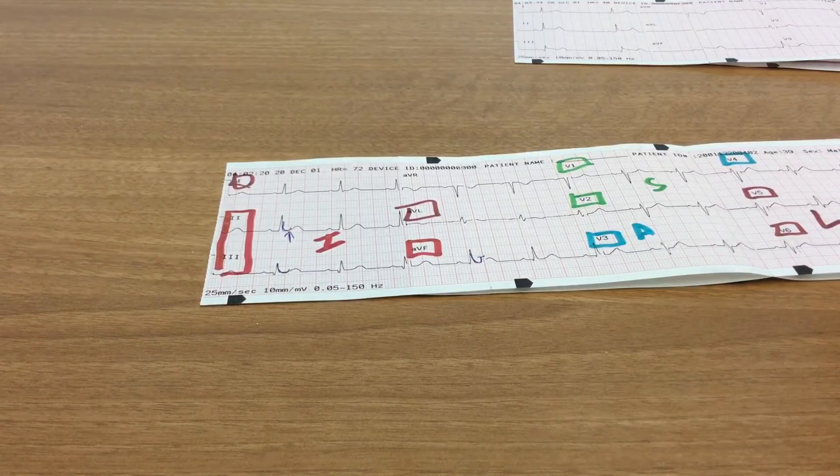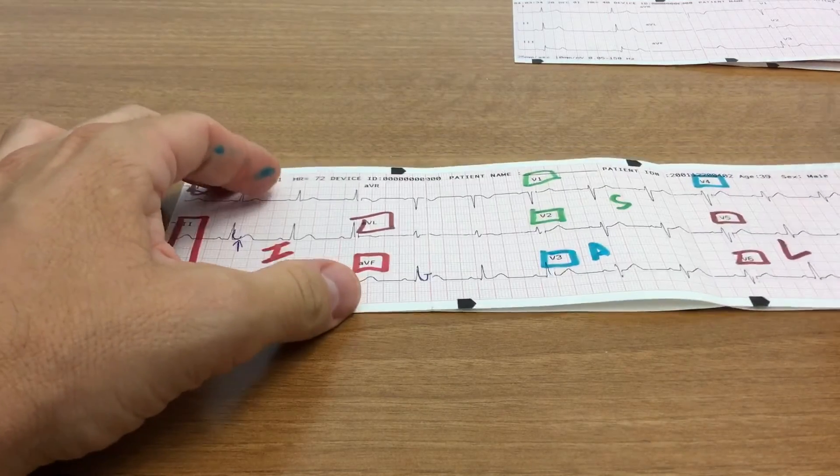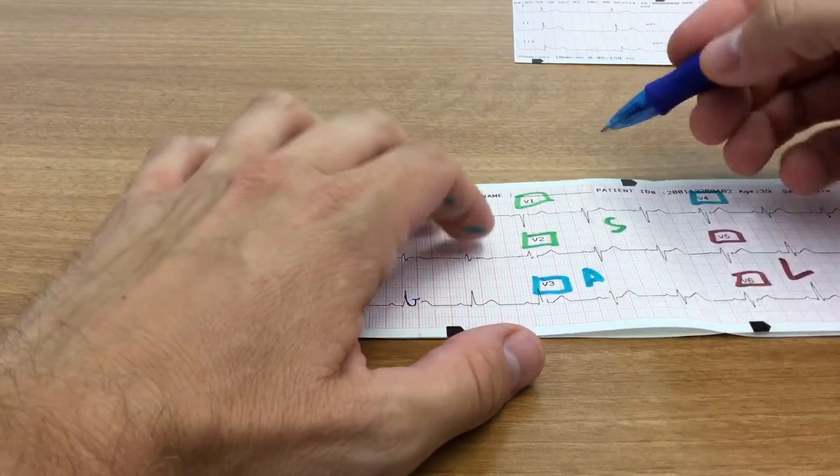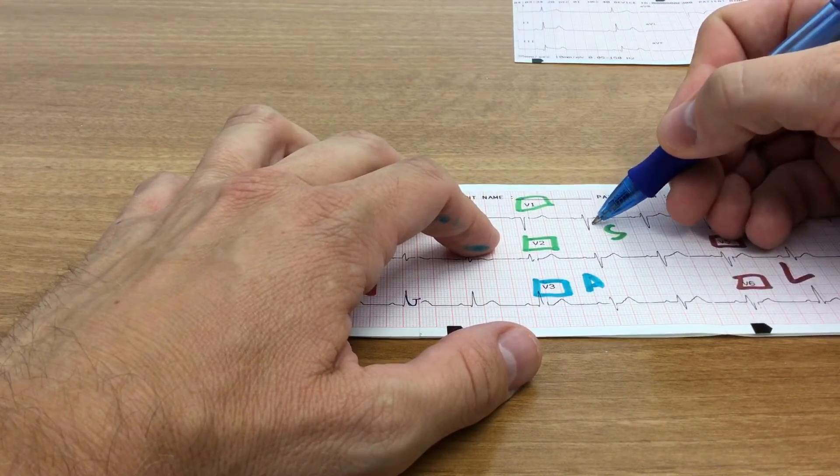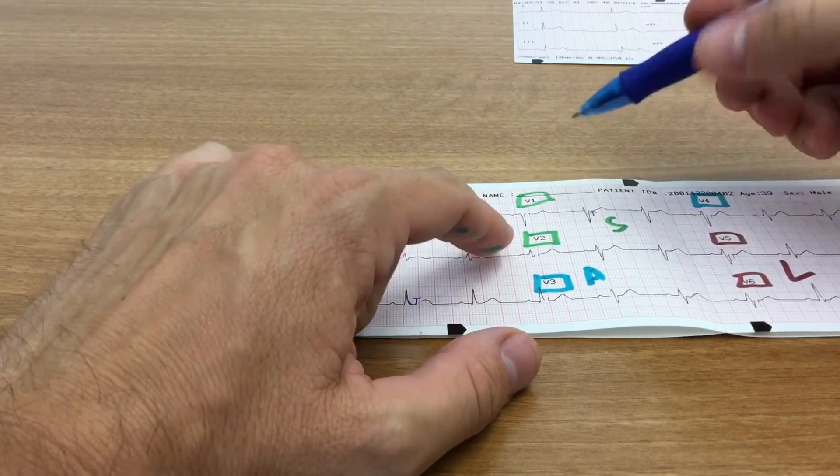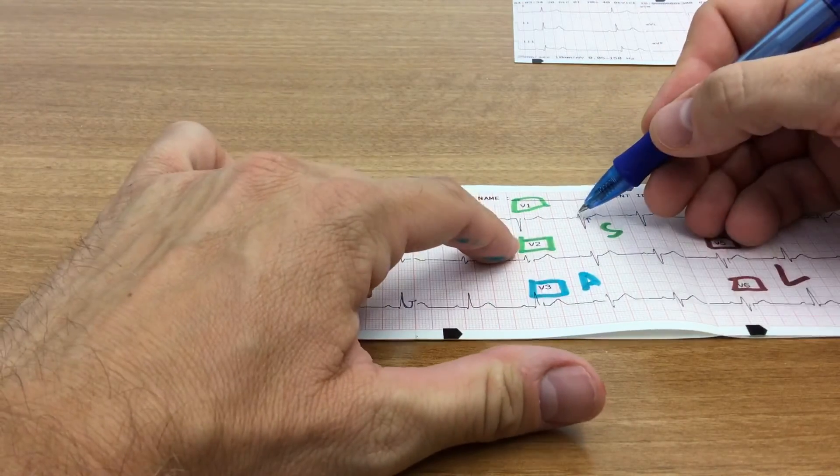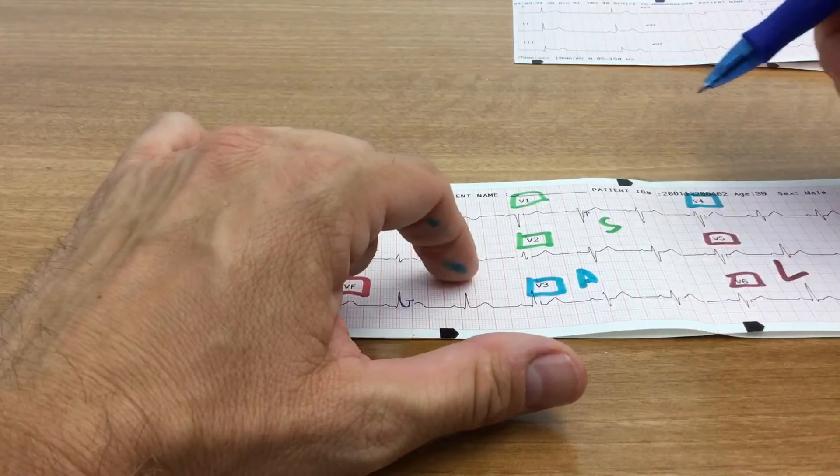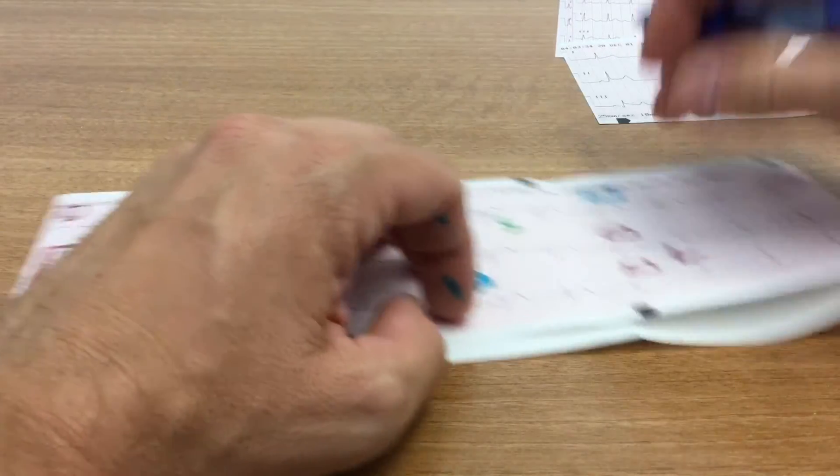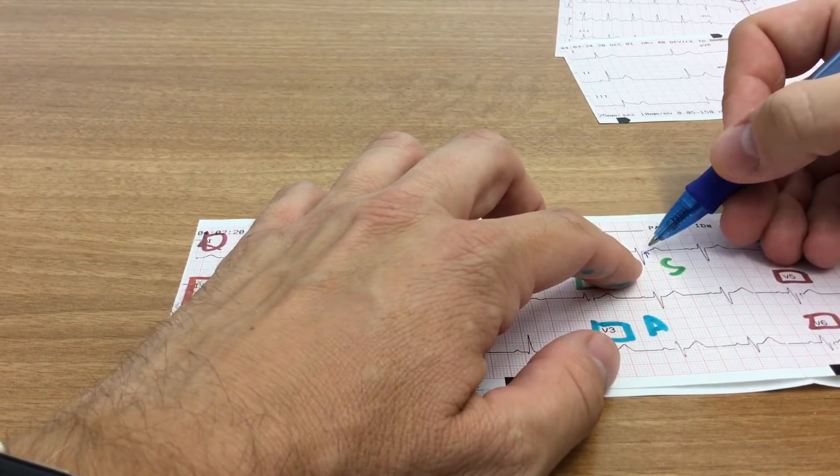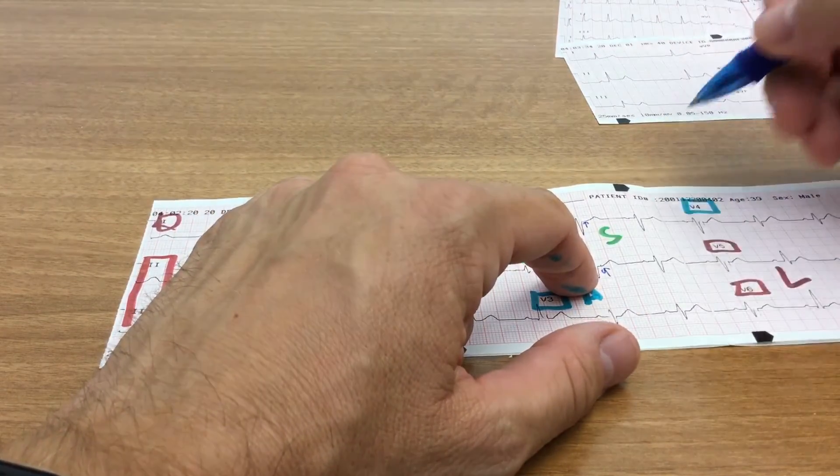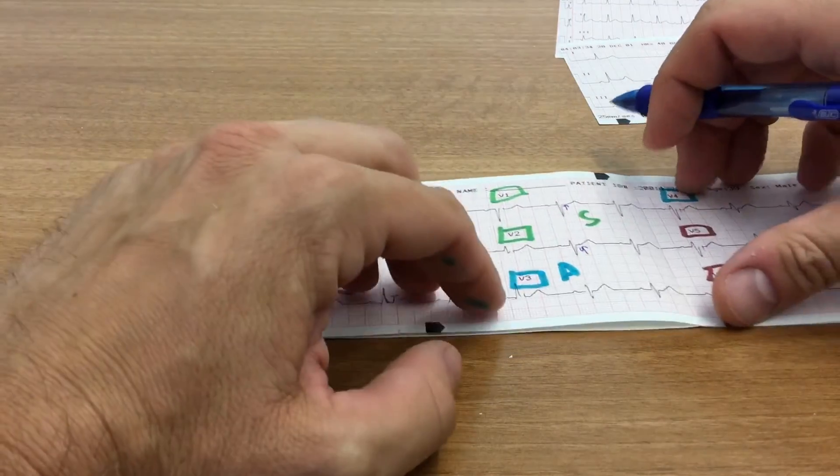So then what I do is I move on to the septal wall, S, septum. So V1. So we look at V1, and again, we have a return to baseline here. Now remember, V1, the QRS normally should have this negative deflection. That's normal in V1, and so it's kind of upside down to how you'd normally look at it, but that doesn't really matter because you can clearly see that I have a return to baseline here. And then V2, the same thing. I have a return to baseline here, so the ST segment checks out. So the septal wall is okay.